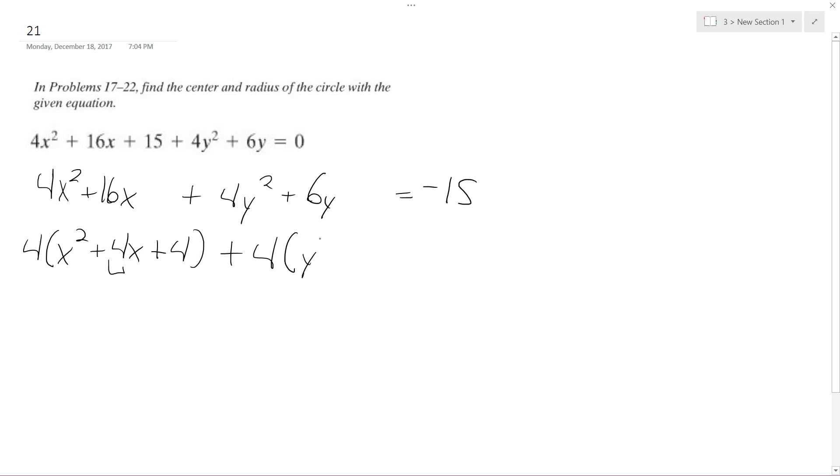So 4, and then this becomes y² + 6 over 4, which is the same thing as 3 halves y. So 3 over 4 squared, and then 3 fourths squared is 9 over 16.